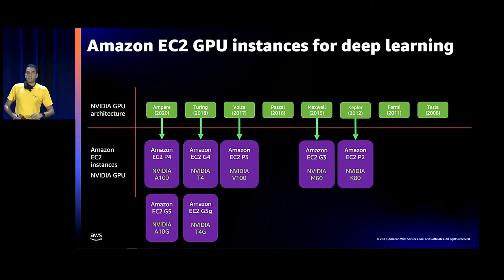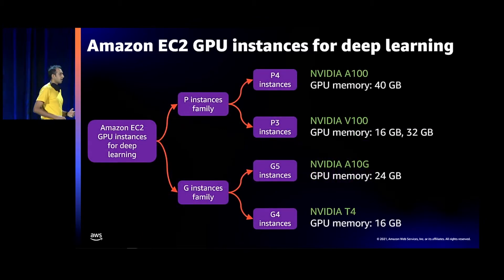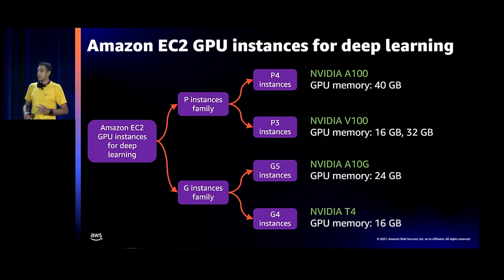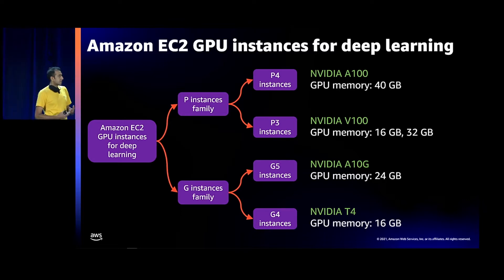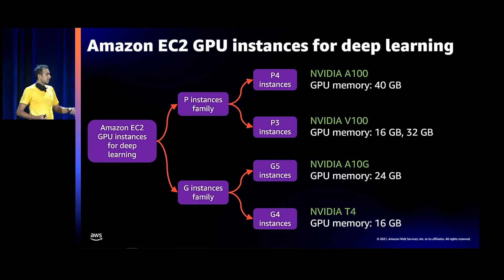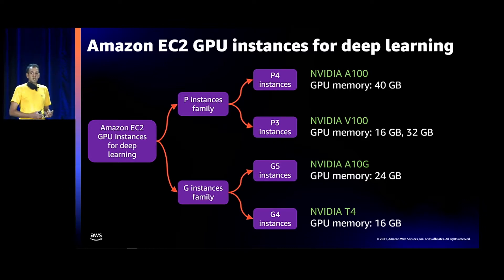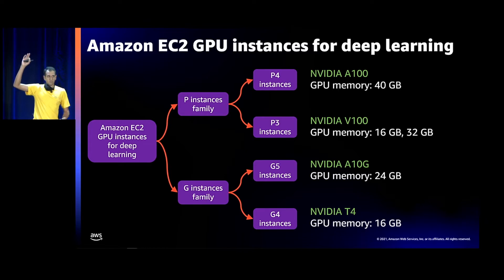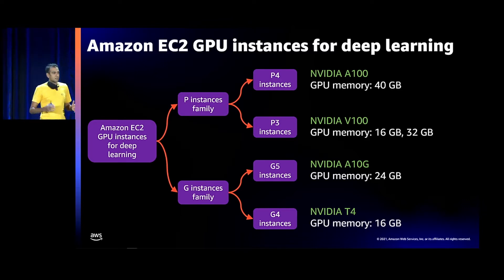Broadly, there are P family instances and G family instances for GPUs. Traditionally, P families were for compute — HPC workloads and machine learning training workloads — and G was geared towards graphics. HPC workloads like genomics require double precision (FP64), but that's not really relevant for machine learning.